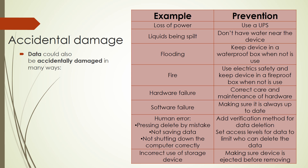There are some examples of accidental damages. When you are using the internet or any system, data could be accidentally damaged in many ways — loss of power (prevention: use a UPS), flooding, fire, hardware failure, or software failure. As a prevention for hardware failure, correct care and maintenance of hardware is required. From these measures you can prevent your data from being lost.